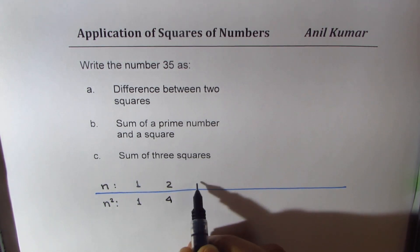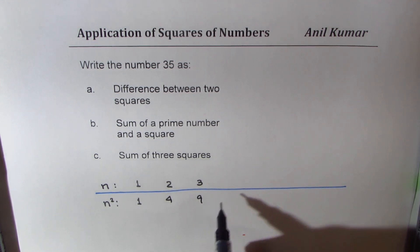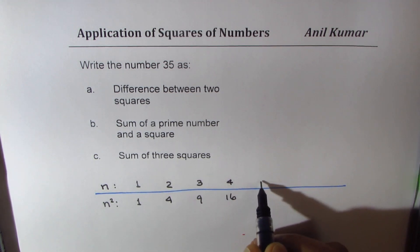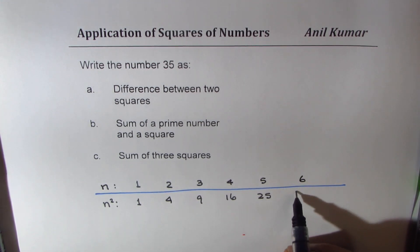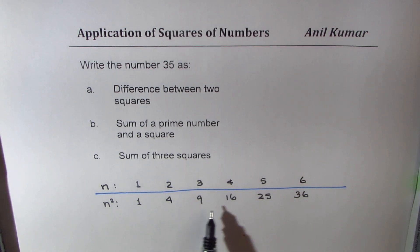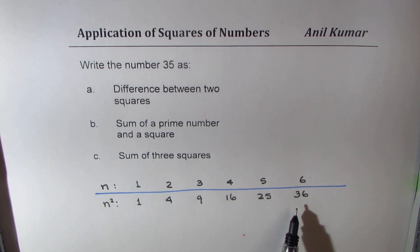3, 3 square is 9, 4 square is 16, 5 is 25, and 6 is 36. Once you have squares of numbers in front of you, then it becomes very simple to answer this question.